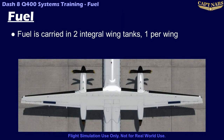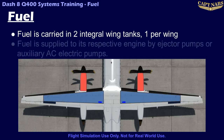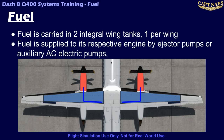Fuel for the Q400 is stored in two integral fuel tanks, one in each wing. Fuel is supplied from each wing tank to its respective engine by an ejector pump, or by an AC-powered auxiliary fuel pump as a backup.